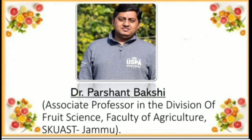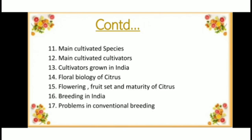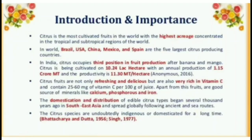Let's get started. These are the contents of my presentation. Introduction and Importance: Citrus is the most cultivated fruit in the world with the highest acreage concentrated in the tropical and subtropical regions of the world. Brazil, USA, China, Mexico and Spain are the five largest citrus producing countries.